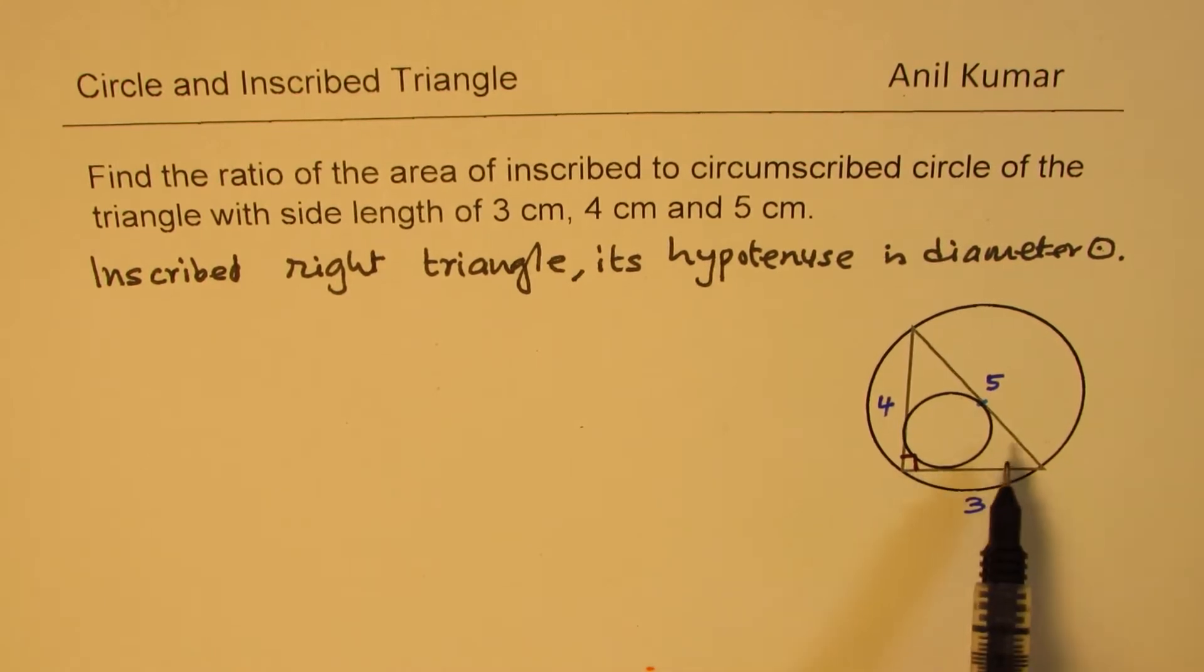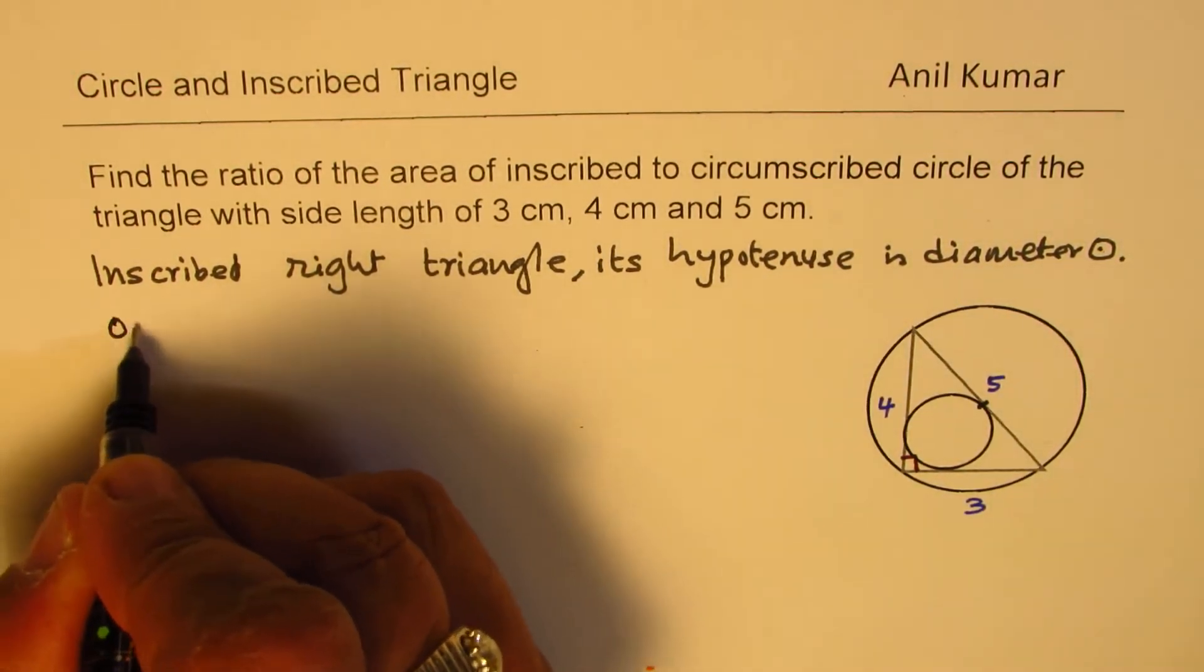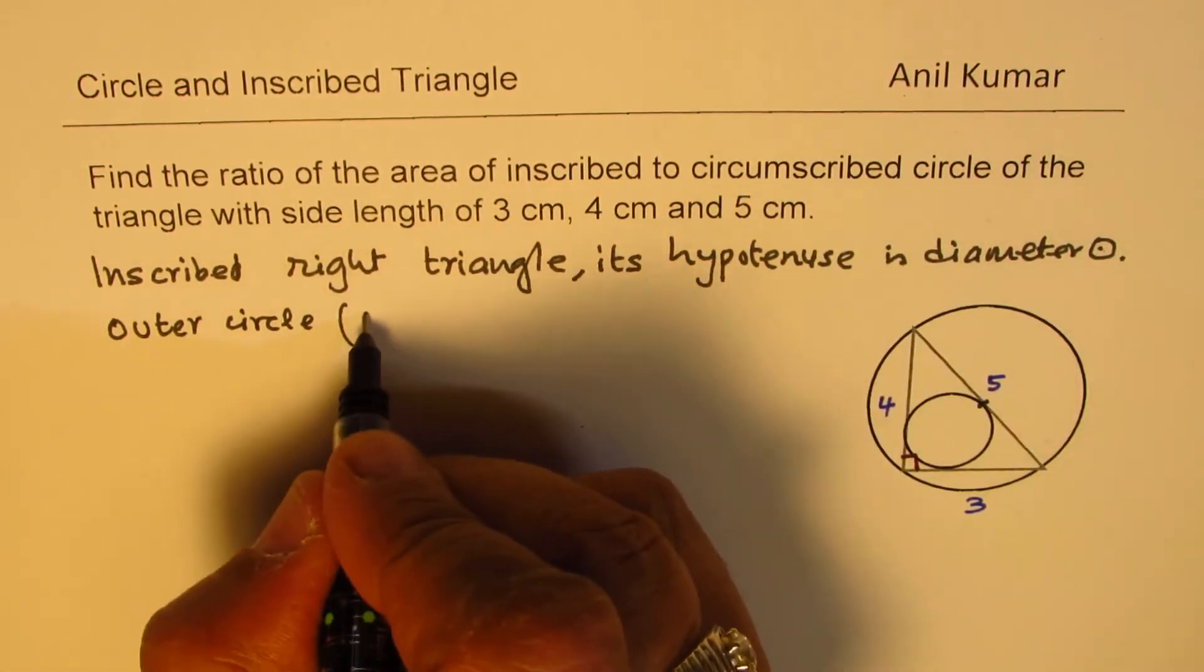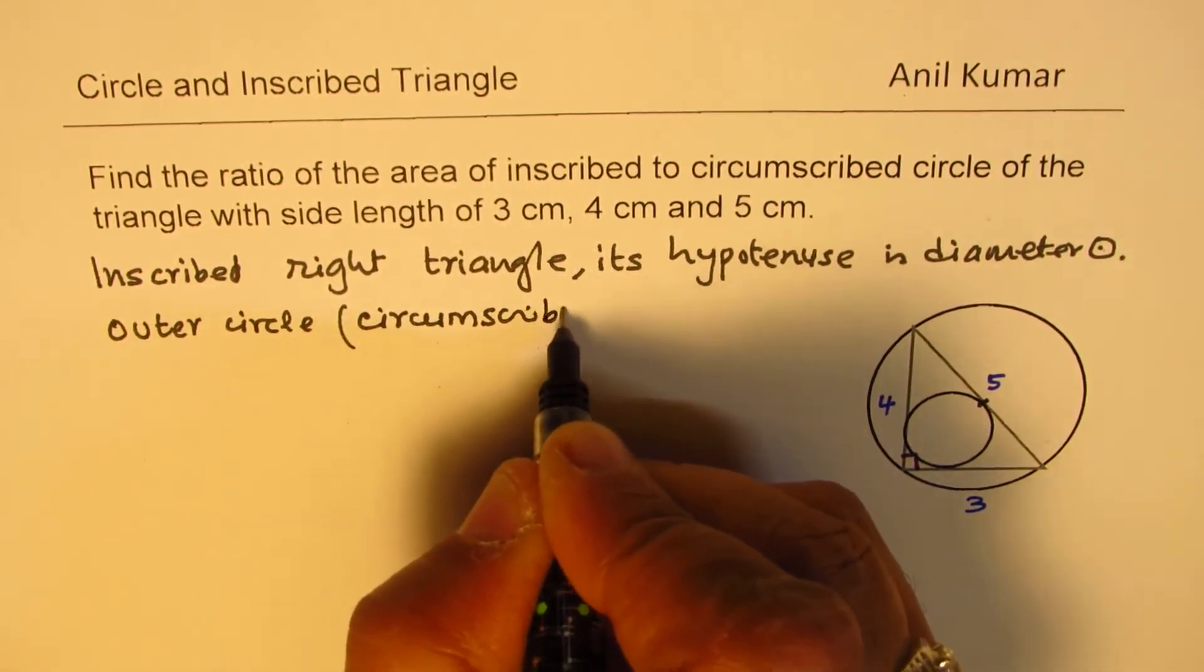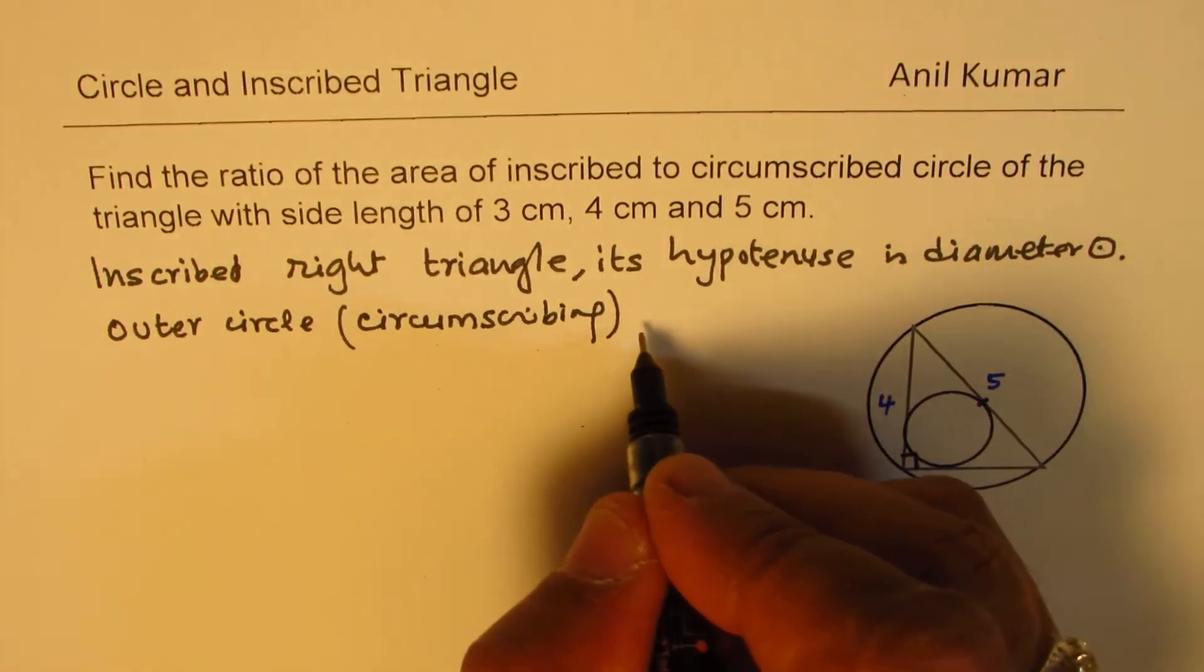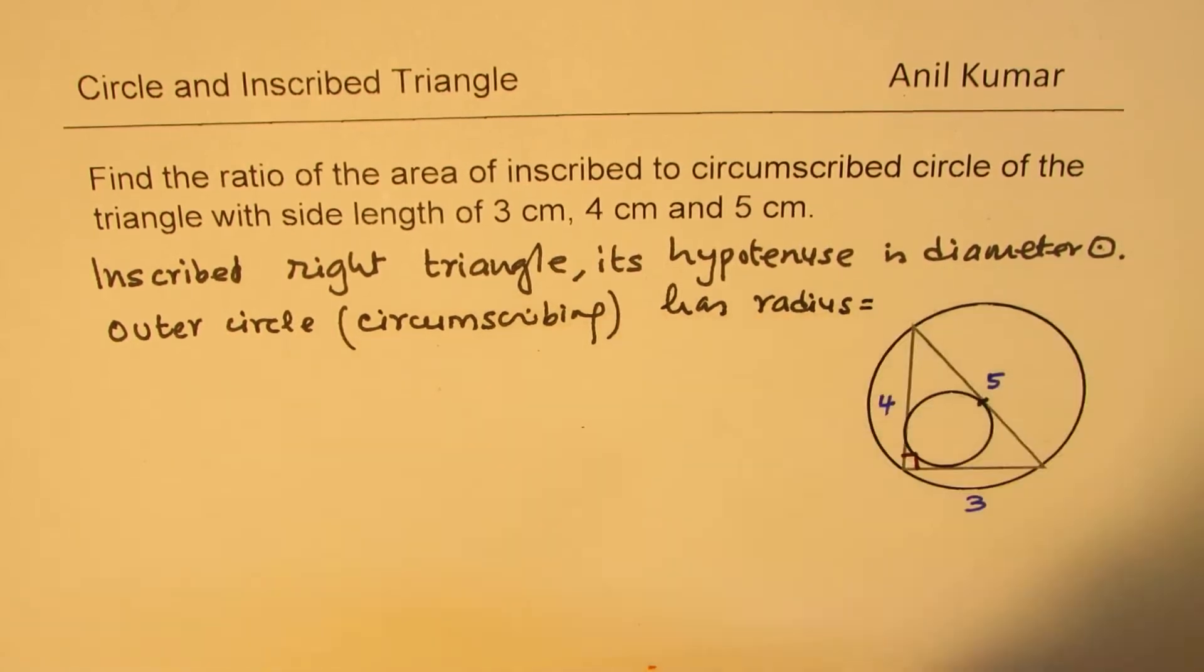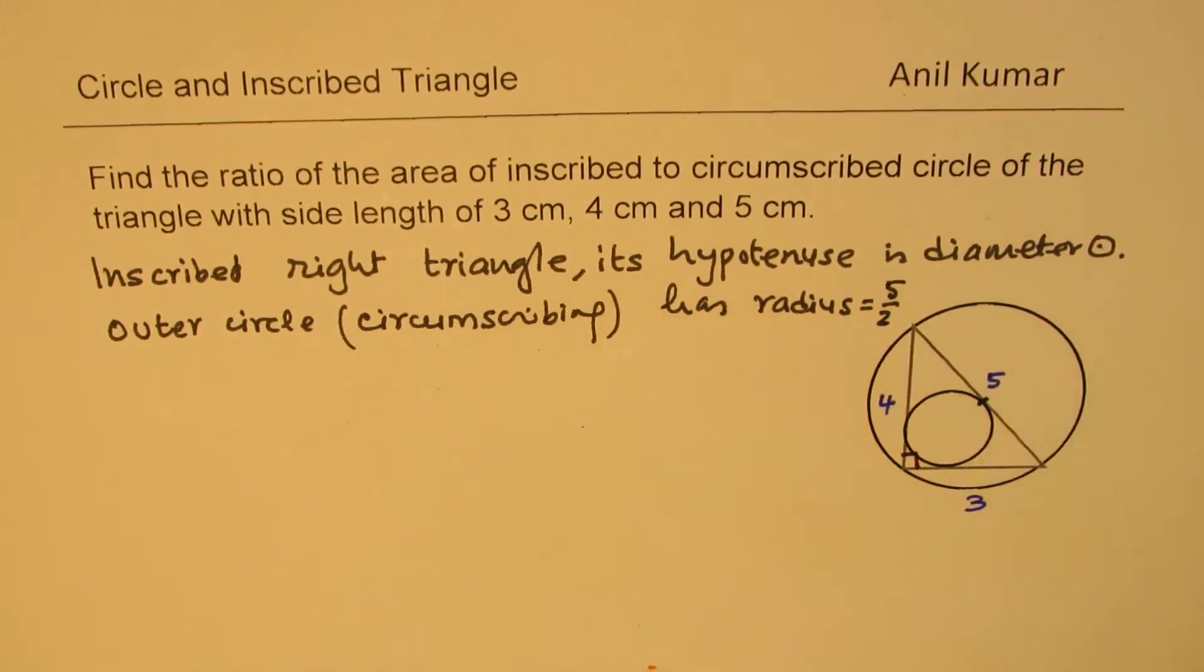Since this is 90 degrees, that has to be the diameter of the circle. So if it is the diameter, that means the outer circle, the circumscribed circle, has radius equals to 5 by 2. 5 is the side, half of the diameter, so 5/2 centimeters.